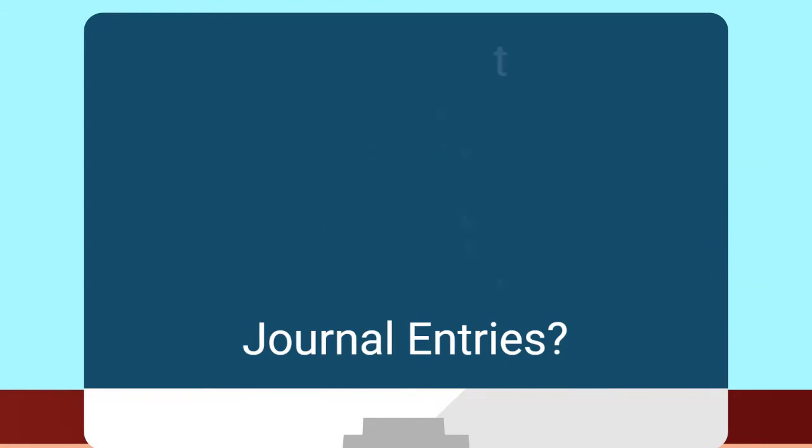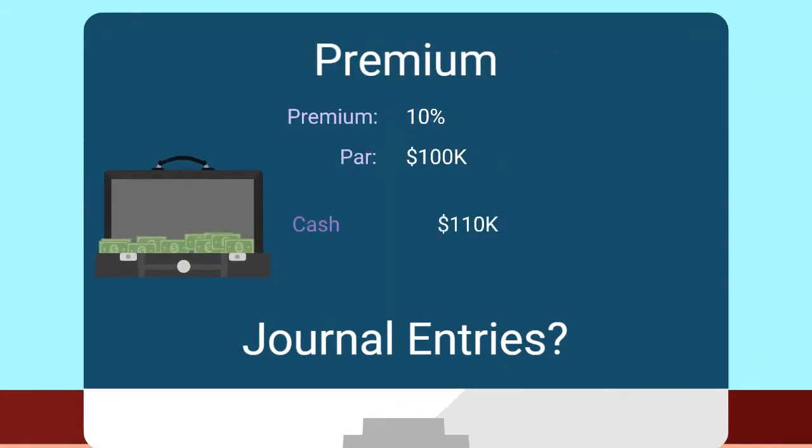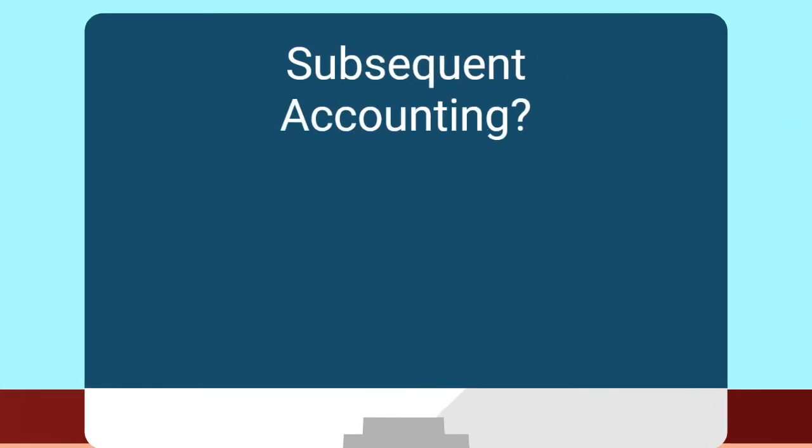And what about a premium? Yeah, it's similar, except for now you have a debit to cash for $110,000 and a credit to debt premium for $10,000 and debt for $100,000. Okay, that's easy enough. But what happens with that premium over the life?